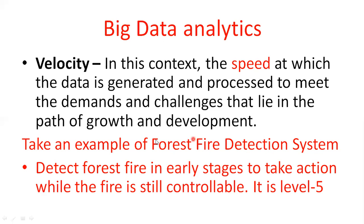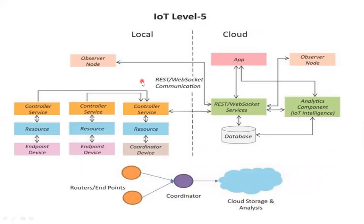That means in a previous video, you discussed different deployment levels. For the forest fire detection system, it is a level five system. There are six different kinds of deployment levels: level one through level six. Level one means the entire storage and application is local. From level four to level six, you use multiple devices — device one, device two, device three.